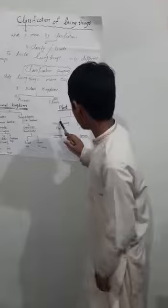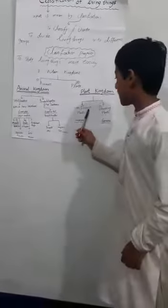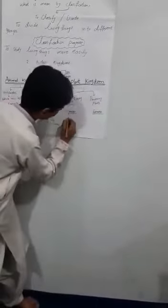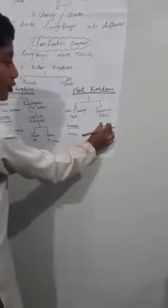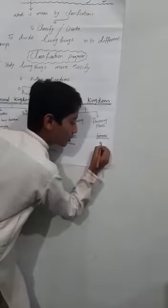Now we have the plant kingdom. This has two points: non-flowering plants and flowering plants. For example, these are non-flowering plants, and flowering plants include rose.